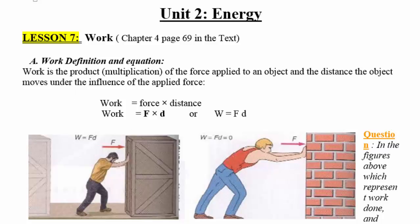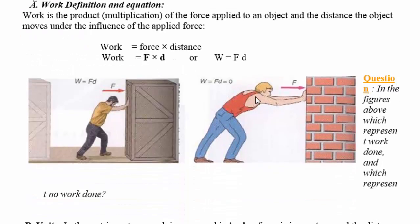Look at the two figures below. In the first figure, the man is pushing against the wall, but the wall is not moving — hence the distance is zero, therefore the work is zero. In the second example, the man is pushing against a cabinet and he was able to move it a certain distance, and hence he is performing work. So to perform work you need two components: force and distance.